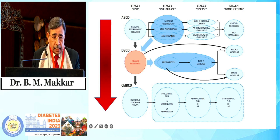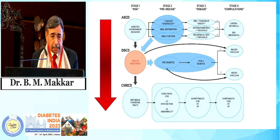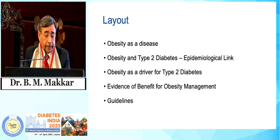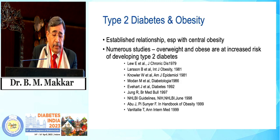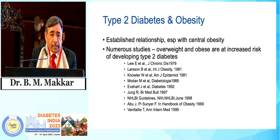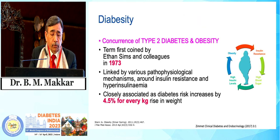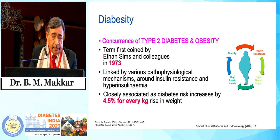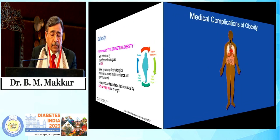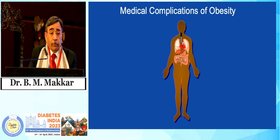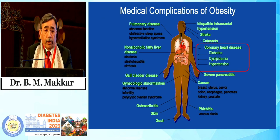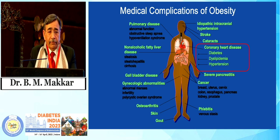Once fat accumulation crosses a threshold, there is dysfunction which leads to insulin resistance, leading to pre-diabetes and diabetes, and down the line complications, and also leading to increased metabolic risk. So the whole story is coming from a dysfunctional fat. There is enough epidemiological data to show a strong correlation between type 2 diabetes and obesity. For every one kilogram increase in body weight, there is a 4.5% increase in the risk of developing diabetes. Whenever we look at an obese individual, we are reminded of a number of comorbidities and complications, with especially increased risk of developing diabetes and cardiovascular disease.